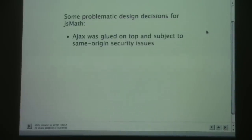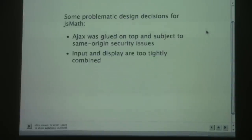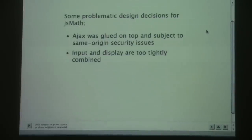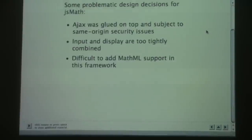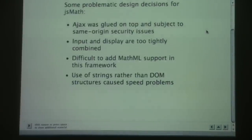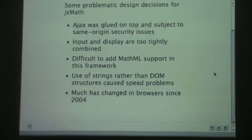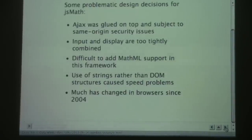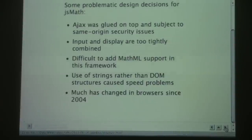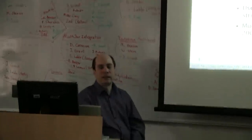When I first started JazzMath in 2004, AJAX was just becoming available and I didn't know about it at the time. One of the users suggested it, and I picked it up, but it wasn't really well integrated. The input and output were too tightly combined, and it was difficult to add MathML support in that framework. A lot of things have changed in browsers since 2004 that we wanted to take advantage of. Additionally — and this will go out on YouTube — a lot of the big players like AMS were interested in this solution, but they didn't want to put their flagship products in the hands of a single programmer.